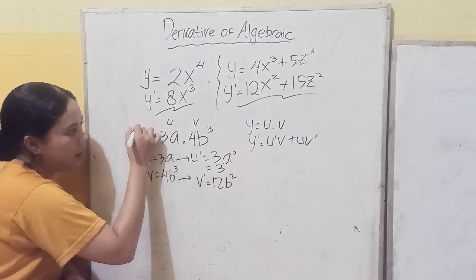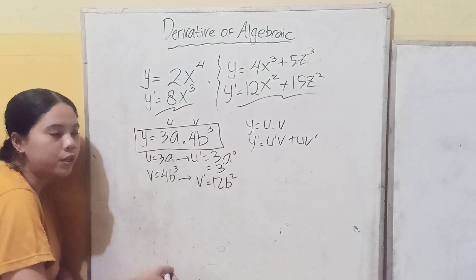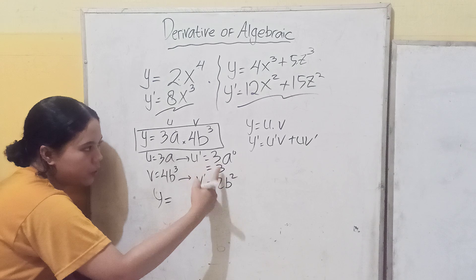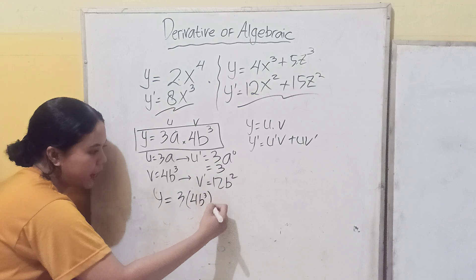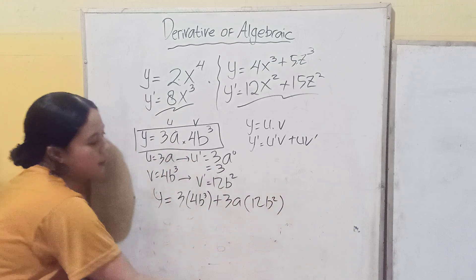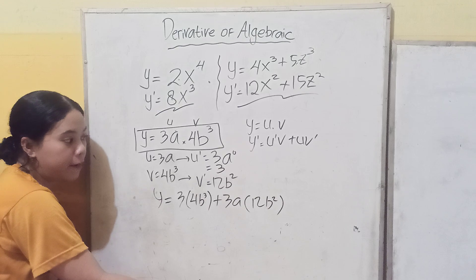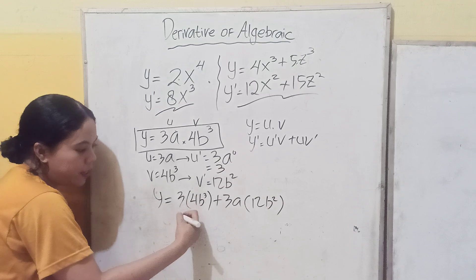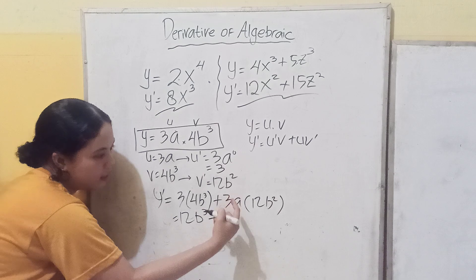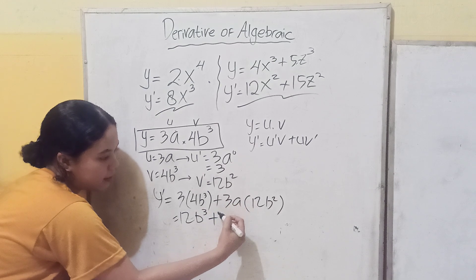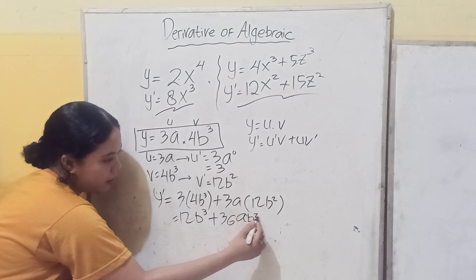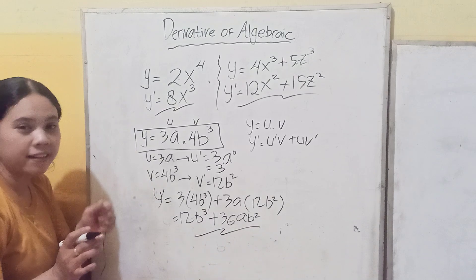So the derivative of y equals 3a times 4b cube is: y' equals u'v plus uv', which is 3 times 4b cube plus 3a times 12b squared. Simplifying: 12b cube plus 36ab squared. Is there any questions so far?